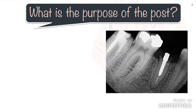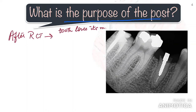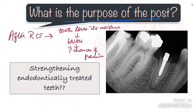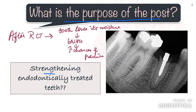Now, coming to a very important question: what is the purpose of the post? Earlier it was thought that all endodontically treated teeth, because of the loss in vitality, dry out and become brittle, making them prone to fracture. Because of this belief, many clinicians placed posts in every tooth that an RCT was done on because they thought that it would strengthen or reinforce the tooth and prevent its susceptibility to fracture.